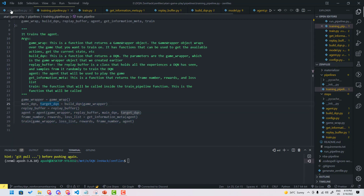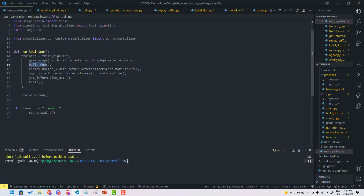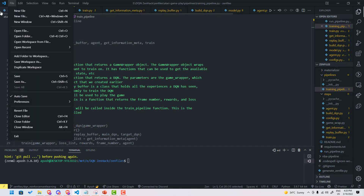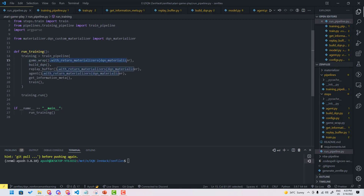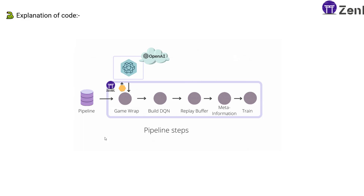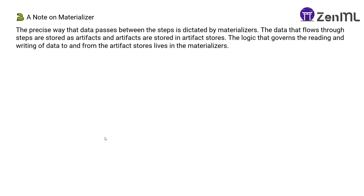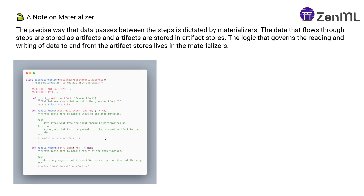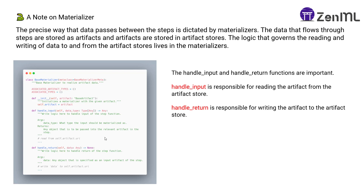Coming back to the training pipeline — in run_pipeline.py you have game wrap, build DQN and all these steps which are provided as arguments to the training pipeline. One thing to note is the materializer. A materializer is a precise way that data passes between steps — data that flows through the steps is stored as artifacts in the artifact store. The logic governs reading and writing data to and from the artifact store. In ZenML you can use a custom materializer for custom data types — see the ZenML documentation for more info.